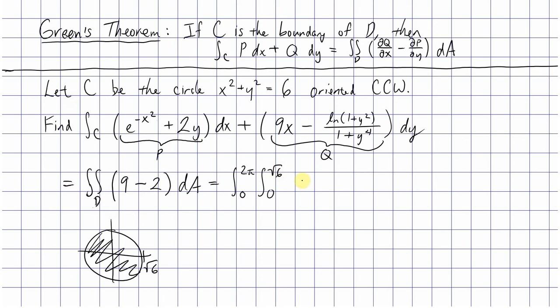Our integrand is 7, and dA becomes r dr dθ. We'll skip the details, but this is actually equal to 42π.